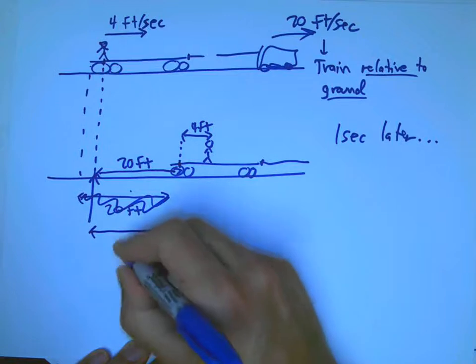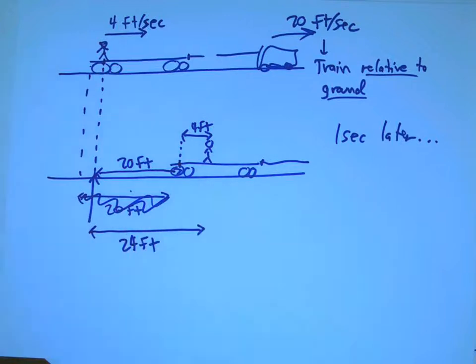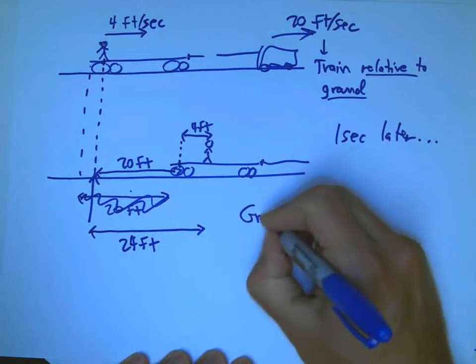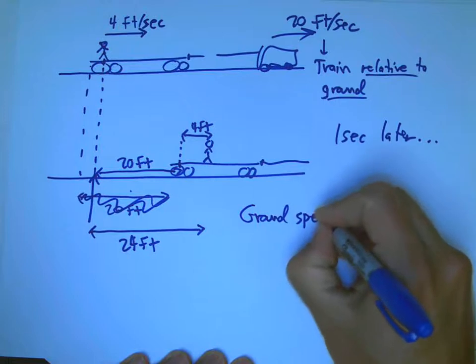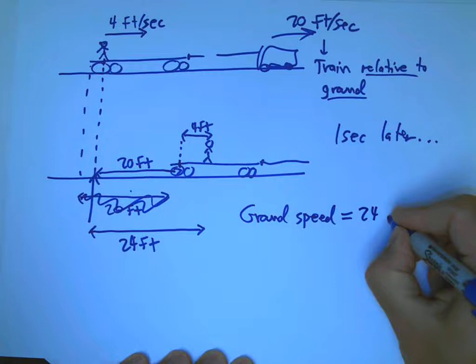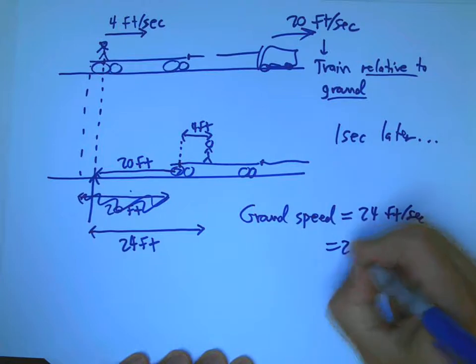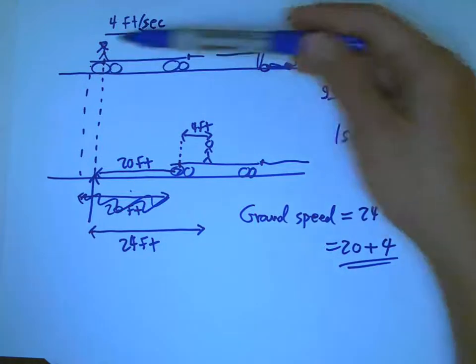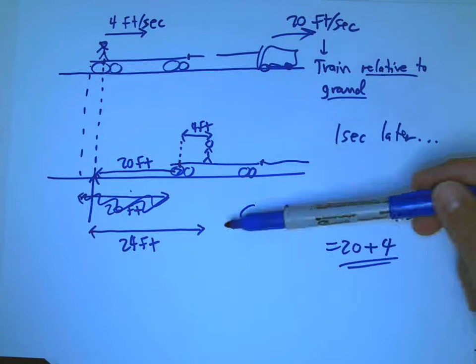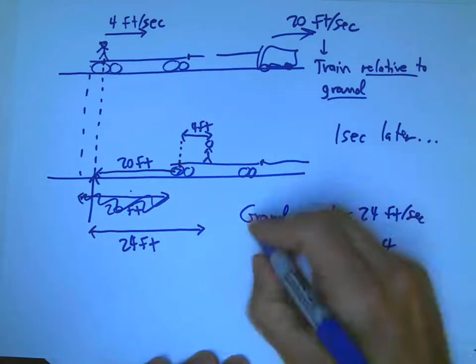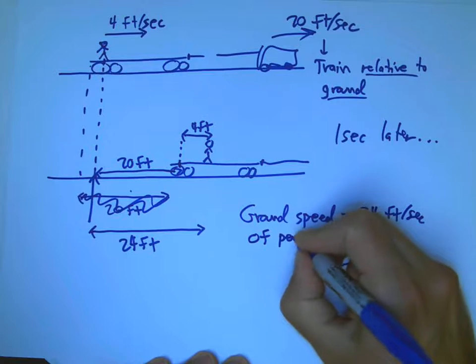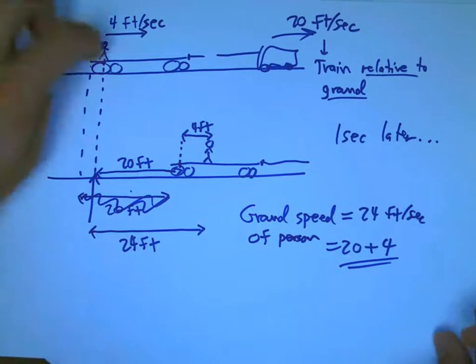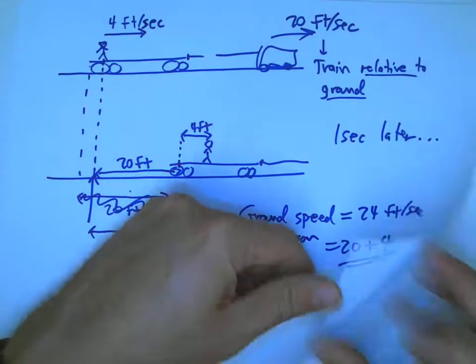A second later, that point has moved, as far as the ground observer is concerned, 20 feet. But this guy has moved 4 feet. So in one second, as far as the ground is concerned, he's moved 24 feet. So the ground speed is 24 feet per second. That's the sum of those two individual speeds - his speed relative to the train and the train relative to the ground. You add those up to get the ground speed, the speed relative to the ground of that person.